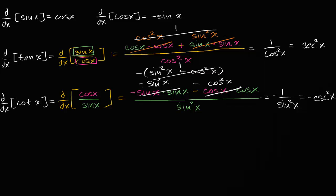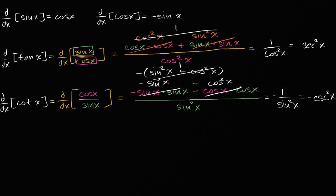In a previous video, we used the quotient rule in order to find the derivatives of tangent of x and cotangent of x. What I want to do in this video is to keep going and find the derivatives of secant of x and cosecant of x. So let's start with secant of x — the derivative with respect to x of secant of x.